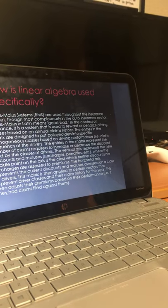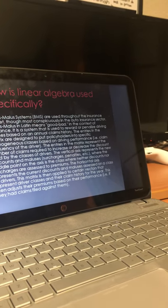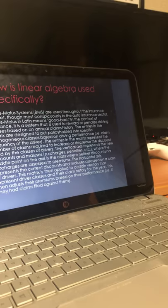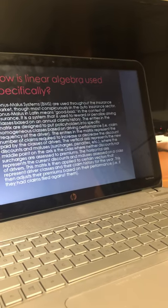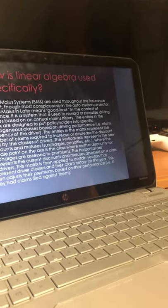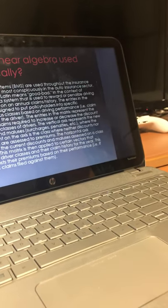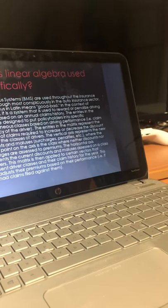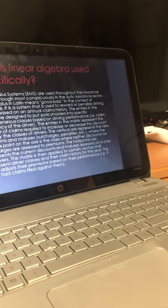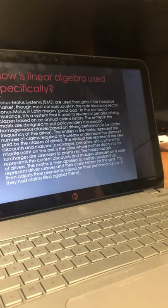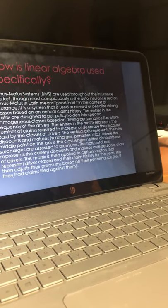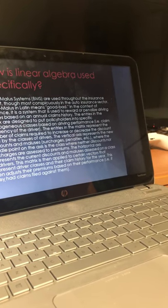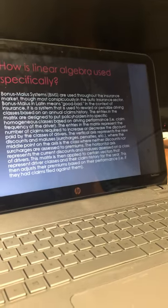And then based on where they are, additional accidents could either lead to more of a surcharge where they're having to pay even more, like greater penalties, or lower penalties if they're safer drivers and it's like a first time thing. So that's basically how actuaries use linear algebra to create the insurance policies for the insurance companies.